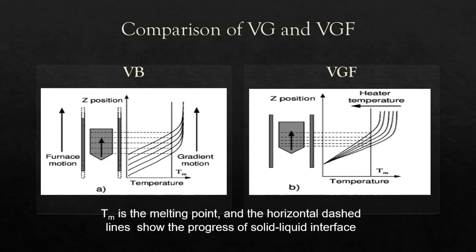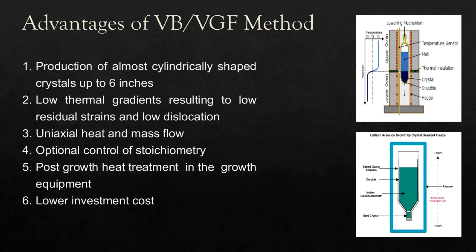After discussing the VB and VGF working principles, here are the advantages of these two methodologies: production of almost cylindrically-shaped crystals up to 6 inches; low thermal gradients resulting in low residual strains and low dislocation density; uniaxial heat and mass flow; optional control of stoichiometry; post-growth heat treatment within the growth equipment; and lower investment cost. These methods are also preferred in industrial production of GaAs with higher-yield ground wafers.